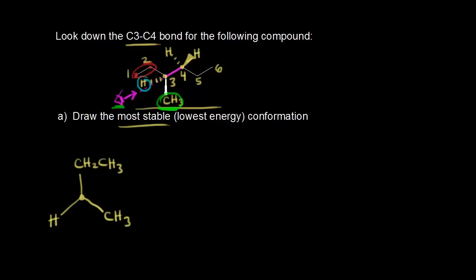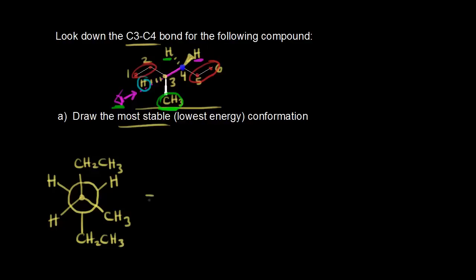Next, we need to think about carbon four. We wouldn't be able to see it because carbon three would be in the way, but we know that carbon four is there, and we represent carbon four with a circle on our Newman projection. What is attached to carbon four? We have a hydrogen going up and to the right, a hydrogen going up and to the left, and then finally a CH2-CH3 going down.